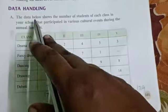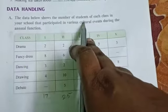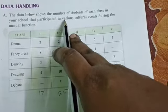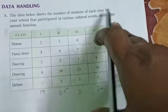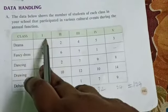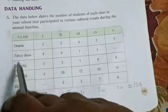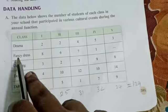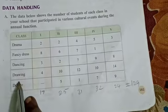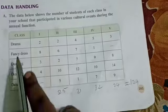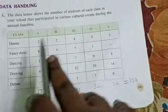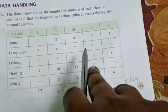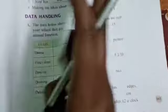For example, the data below shows the number of students of each class in your school that participated in various cultural events during the annual function. Classes one to fifth class, and what events were conducted: drama, fancy dress, dancing, drawing, and debates. These are the five events taken for five classes. In each class, how many students participated in each event will be given.